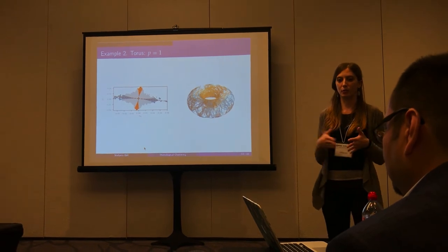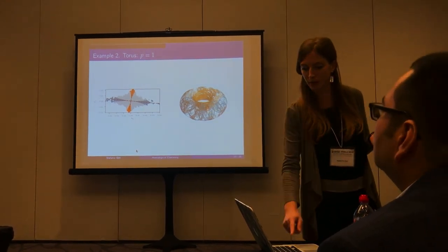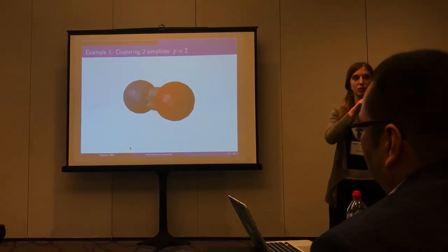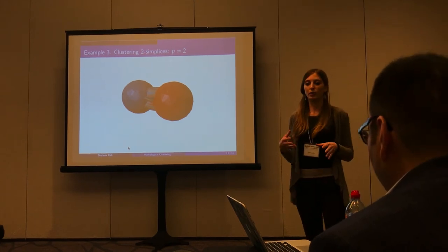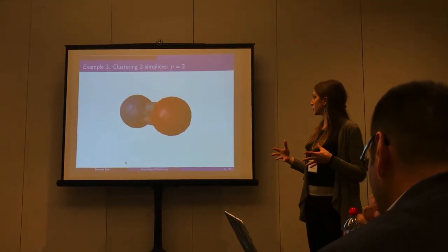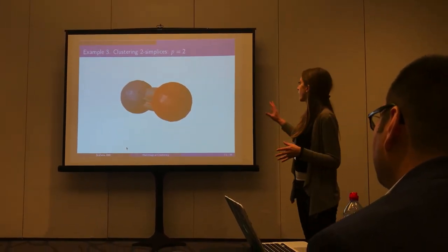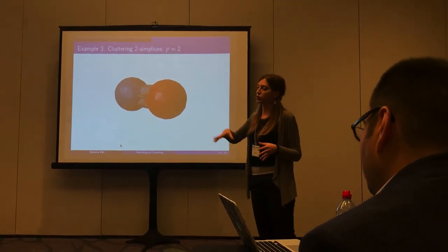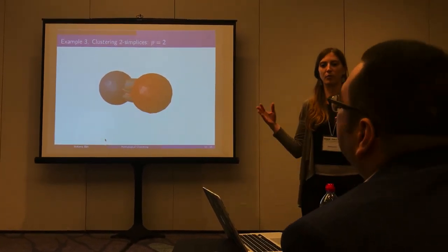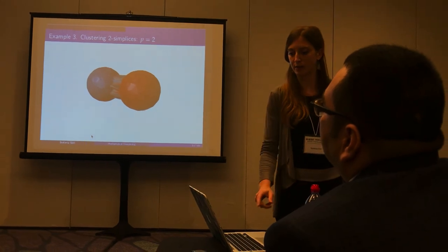The algorithm can be applied to simplices of any dimension p. For instance, we had a simplicial complex given by a triangulation of two spheres attached by a filled cylinder, and we wanted to cluster the triangles. Applying the harmonic clustering algorithm for p=2, we obtain two clusters given by triangles in blue and triangles in orange, corresponding to the two two-cavities in the simplicial complex given by the two spheres. In all cases, we are able to detect cavities in the simplicial complex.